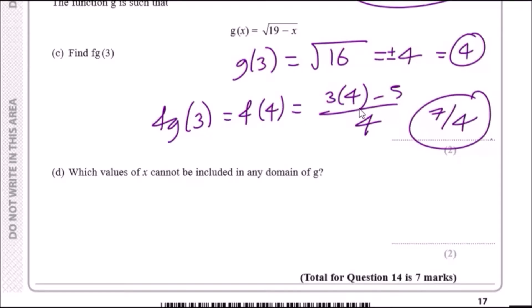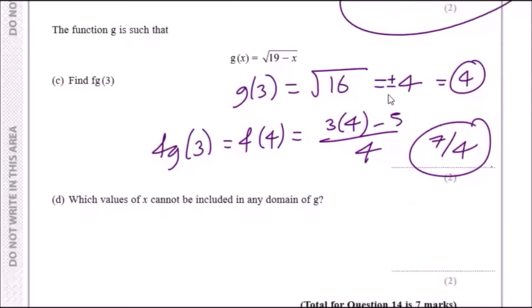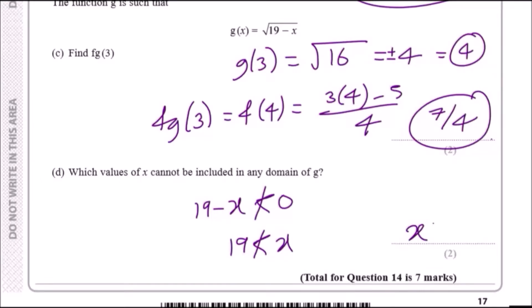Now: which values of x cannot be included in the domain of g? We're dealing with a square root function, and inside a square root you cannot have a negative value. So 19 − x cannot be less than zero. Rearranging, x cannot be greater than 19. So the values of x that are excluded are those greater than 19.